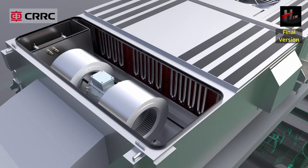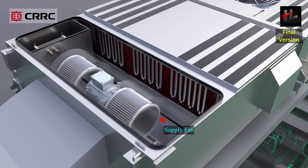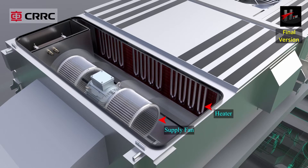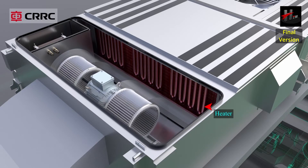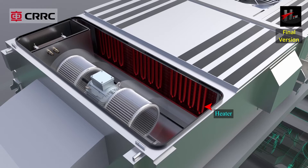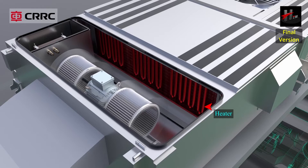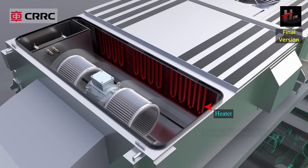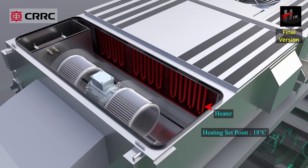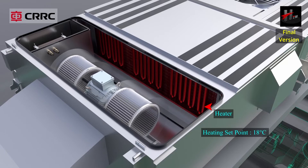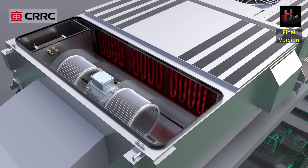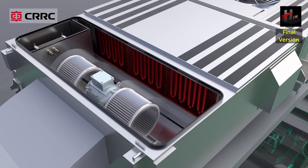During operation in the heat mode, only the supply fan and the heater are energized. The heater bank is energized when the return air temperature falls below the heating set point, i.e. 18 degrees centigrade. The heater banks also get energized in the dehumidification mode.